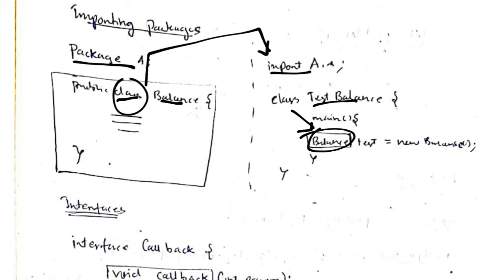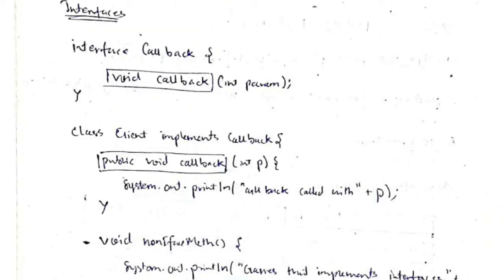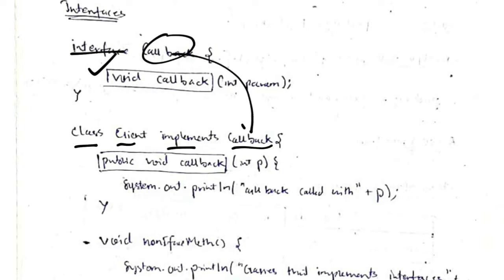Implementing an interface is straightforward. We use the keyword 'interface' and write the interface name, then declare a function. In whichever class we want to implement it, we write 'class Client implements Callback', and then define the function as needed.